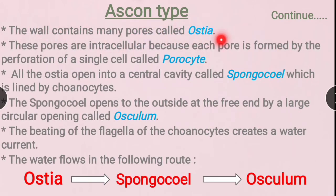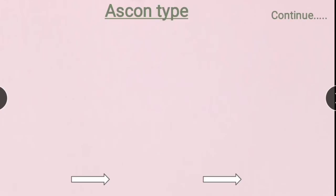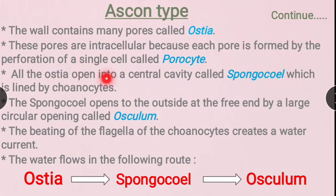The wall contains many pores called ostia. These pores are intracellular because they are formed by a single cell performing a single role. All the ostia open into a central cavity called the spongocoel. The spongocoel is wider and lined by choanocytes — the flagellated cells.